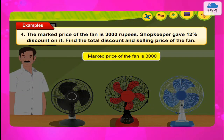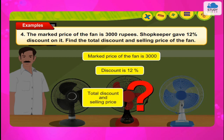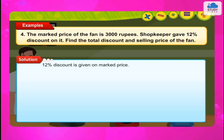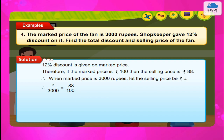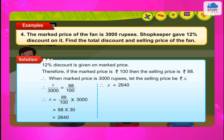Example 4: The marked price of the fan is Rs. 3000. The shopkeeper gave a 12% discount on it. Find the total discount and selling price of the fan. Solution: 12% discount is given on marked price. Therefore, if the marked price is Rs. 100, the selling price is Rs. 88. Therefore, when marked price is Rs. 3000, let the selling price be Rs. X. Therefore, X upon 3000 = 88 upon 100. Therefore, X = 88 × 3000 upon 100 = 88 × 30 = Rs. 2640. Therefore, selling price of the fan is Rs. 2640.